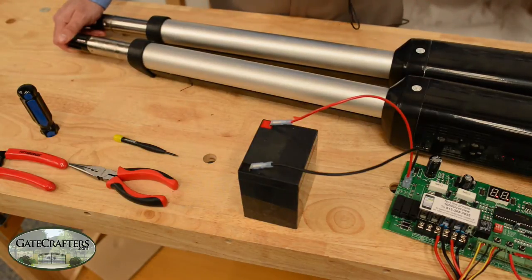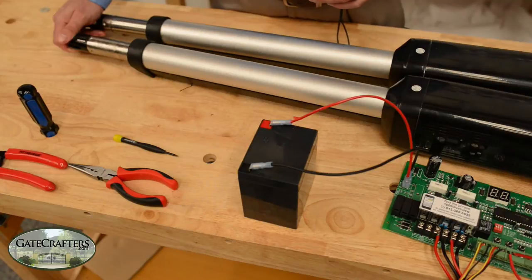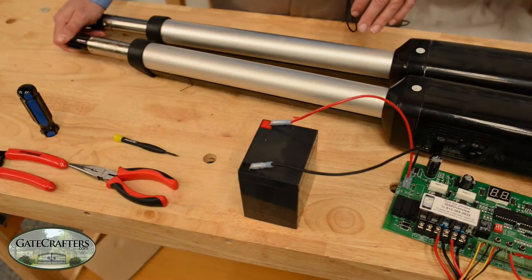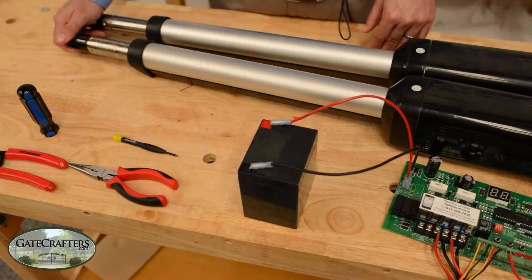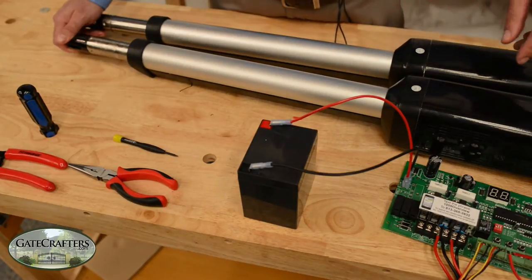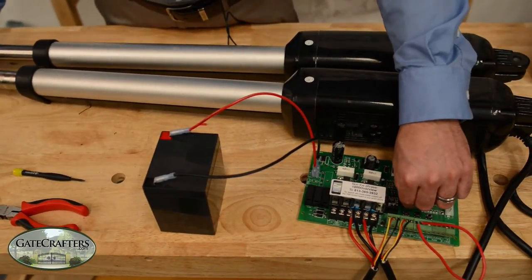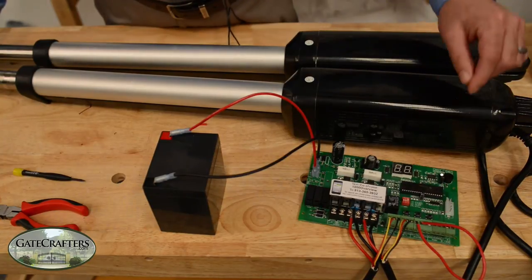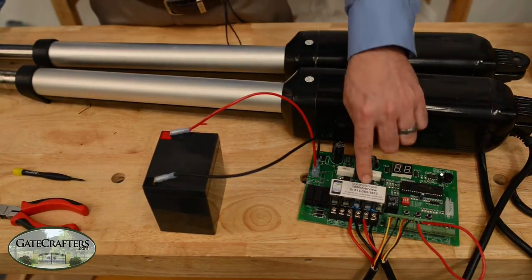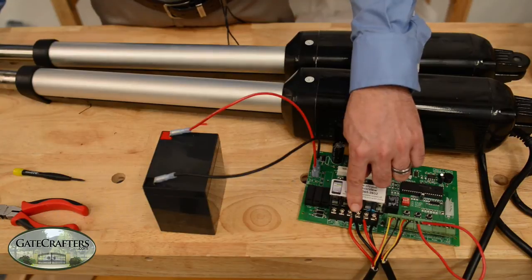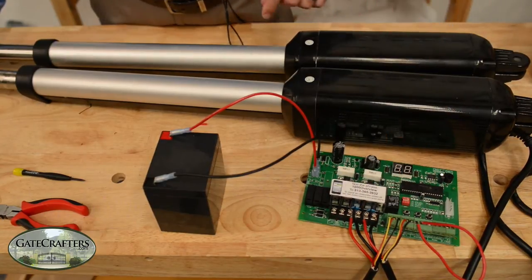First thing we're going to do is set it to be a single gate operator. We're going to take one of the gate operators out of this equation. So I'm going to flip the center dip switch down. This will make it so only the motor that is wired into motor one and limit one is going to be active.